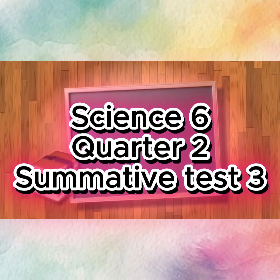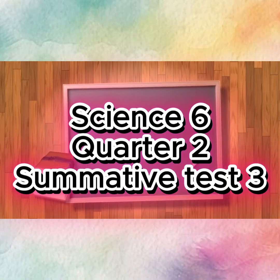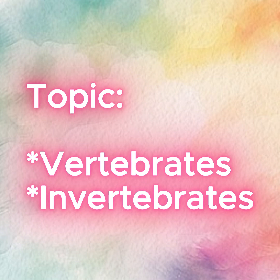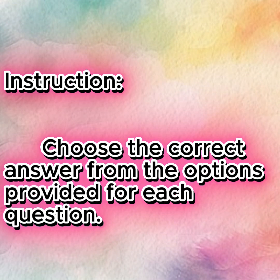Science 6. Quarter 2. Summative Test 3. Topic: Vertebrates and Invertebrates. Instructions: Choose the correct answer from the options provided for each question.